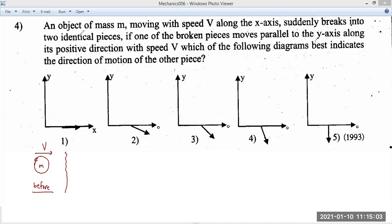An object suddenly breaks into two identical pieces. If one of the broken pieces moves parallel to the y-axis along its positive direction with speed v. Now, we all know what is the y-axis and x-axis. This is according to the coordinate system.